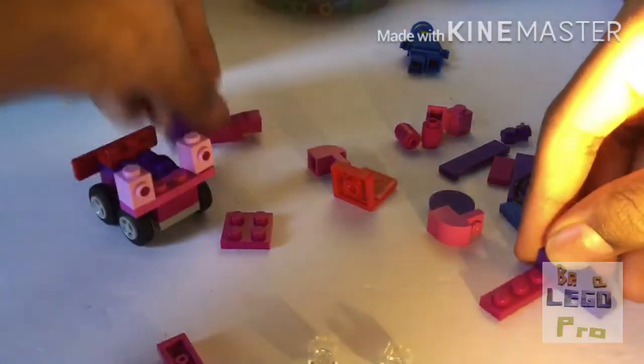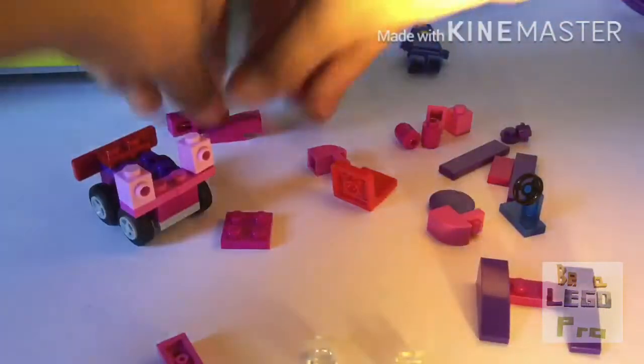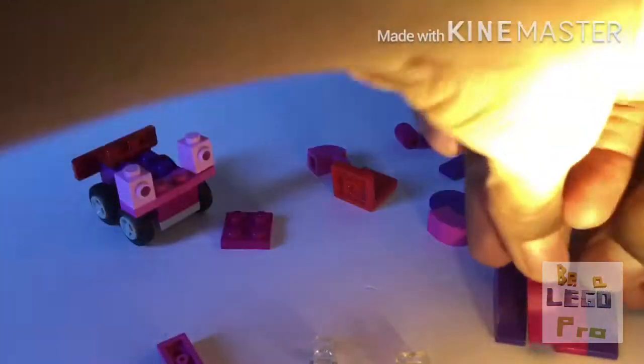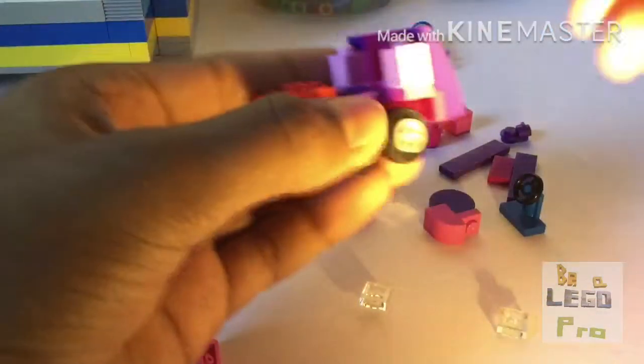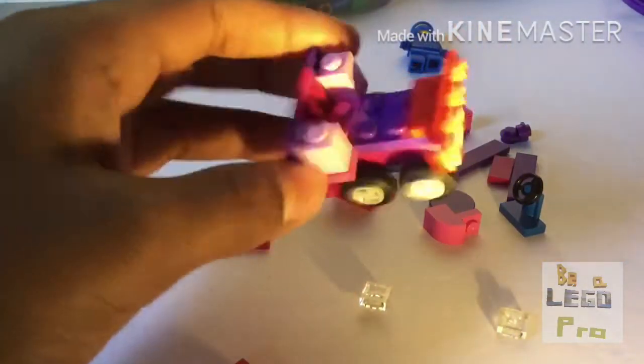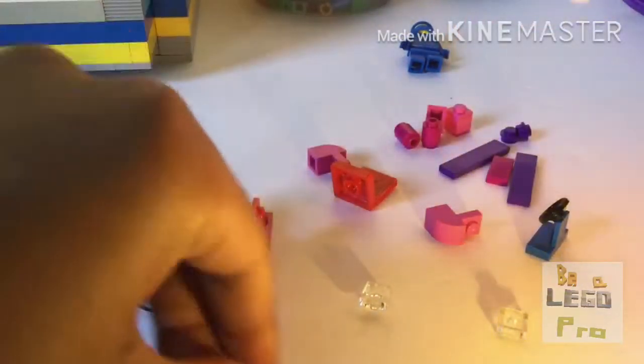Now we're going to build the front. Take two of these bricks, put them on the sides, two in the middle. This is very important: in this brick there's three different places you can put it - here, here, and here. I want you to put it in the second one, like so.